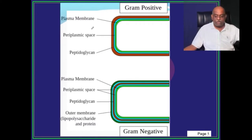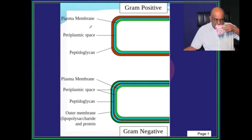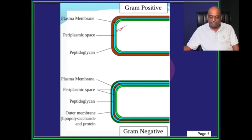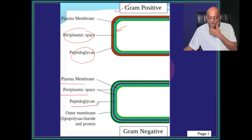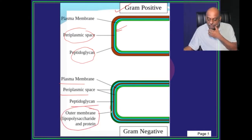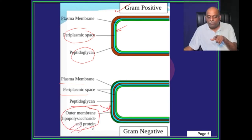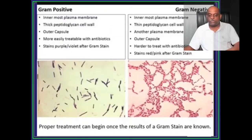Now, when we talk gram positive and gram negative organisms, you should remember there is a plasma membrane, periplasmic space, and a peptidoglycan — that is gram positive. For gram negative, you have a plasma membrane, periplasmic space, peptidoglycan, and along with that there is an outer membrane. This outer membrane contains lipopolysaccharide and protein — that is the speciality of gram negative, what you should remember.